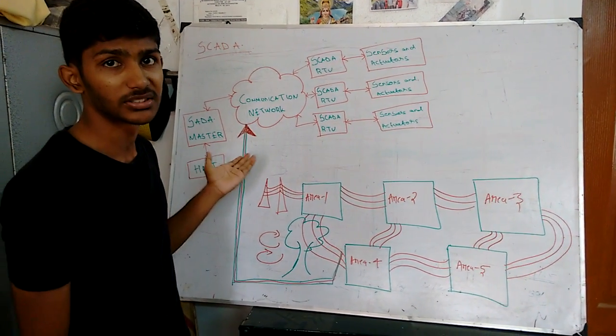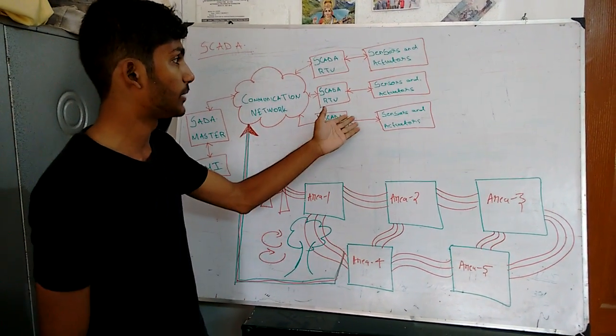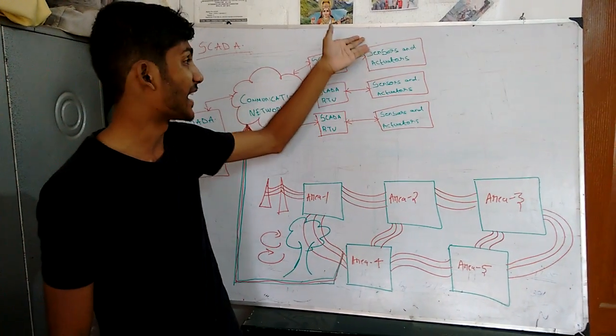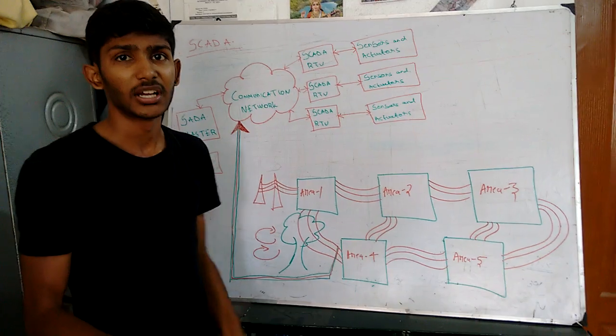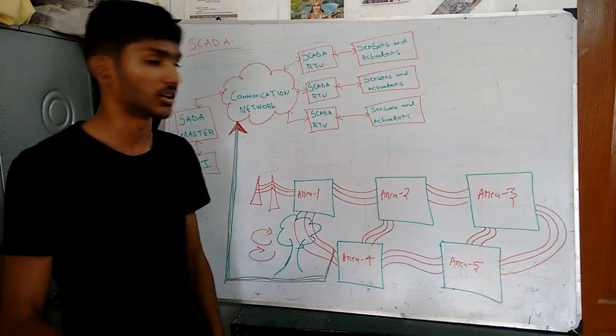HMI is used manually by humans, while RTU is for automatic purposes. Sensors and actuators are used for sensing objects and detecting if any fault occurs.